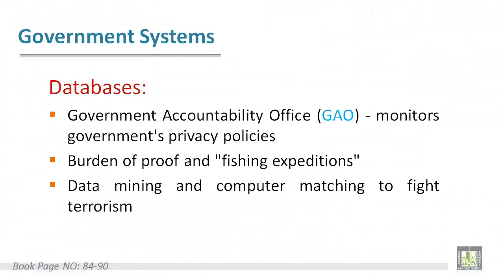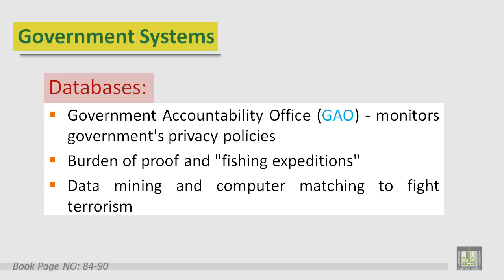Now let's move to the second topic: government systems. In government systems there are many databases, and these databases are linked. In the U.S., the Government Accountability Office monitors the government's privacy policies in these databases, which contain huge amounts of data. Data mining and computer matching can be used to achieve things like fighting terrorism.